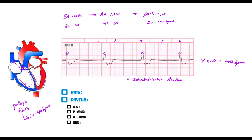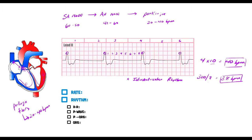This is a six-second rhythm strip, so we multiply the number of R waves by 10: one, two, three, four — four times ten is 40 beats per minute. Using the box method from R wave to R wave, counting approximately eight boxes: 300 divided by eight is about 38 beats per minute. Both methods give us roughly 40 beats per minute.